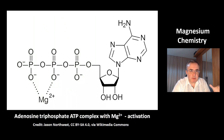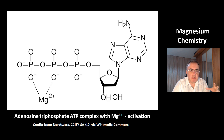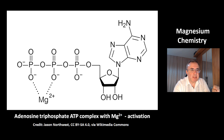This is the molecule ATP — adenosine triphosphate — the molecule in the organism that provides energy for all biochemical reactions. The energy is stored in the phosphate groups. Magnesium forms a complex with the Mg²⁺ ion, and the magnesium ion is needed for the activation of this molecule.